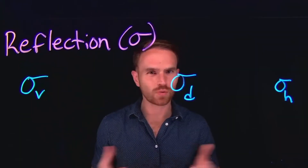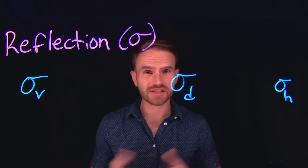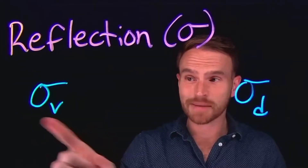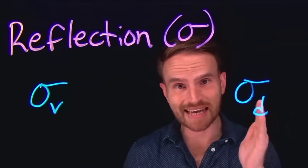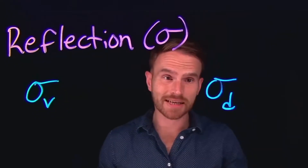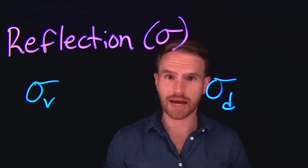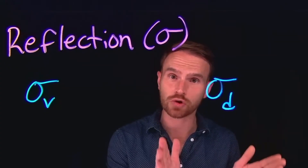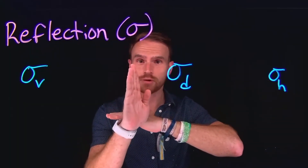Next up is reflection operations, symbolized by the Greek letter sigma. There are three different types: sigma v, sigma d, and sigma h. Sigma v is probably the most common — it contains the principal rotation axis and also contains one or more atoms. Sigma d, the dihedral plane, also contains the principal rotation axis, but that plane passes through the angle between two atoms or two bonds. Sigma h is a mirror plane that is perpendicular to the principal rotation axis.